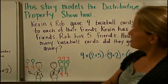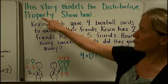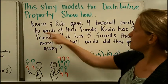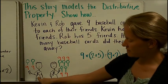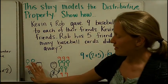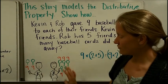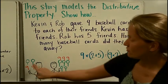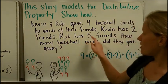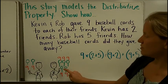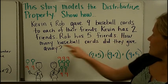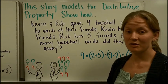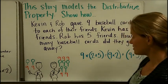And finally, this story models the distributive property, show how. Kevin and Rob gave 9 baseball cards to each of their friends. So here's Kevin and here's Rob, and they have some amount of friends. Every single friend of theirs is going to get 9 baseball cards. Here's some more information. Kevin has 2 friends, and Rob has 5 friends. That's in green. How many baseball cards did they give away? Well, the distributive property says we could solve that problem 2 ways and still get the same answer.